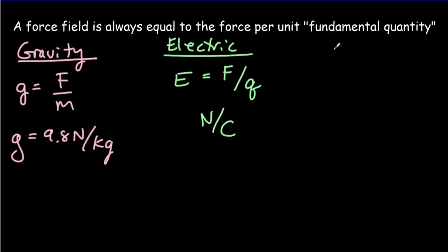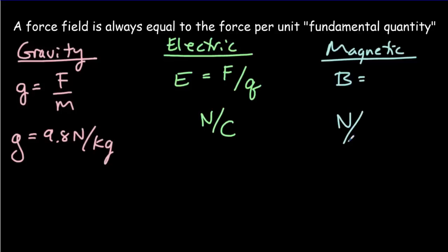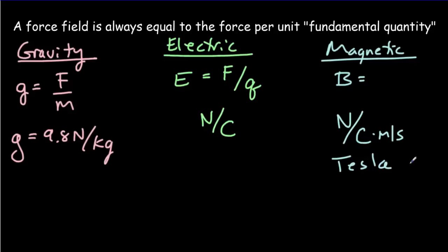For the magnetic field, we use a capital B to represent the magnetic field strength. The formula is a little more complicated, but the units are: newtons per unit fundamental quantity for the magnetic field. The fundamental quantity that creates magnetic fields is moving charges. For the charge part, we need coulombs; for the motion part, we need units of speed — meters per second. So the units for the magnetic field are newtons per coulomb per meter per second. That's complicated to say, so we simplify it and call it a Tesla, named after Nikola Tesla.